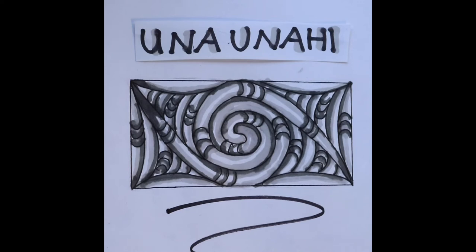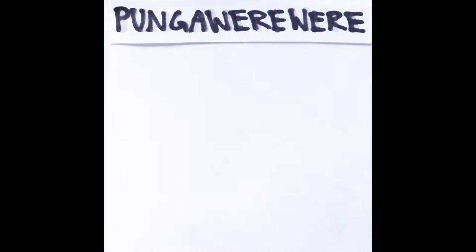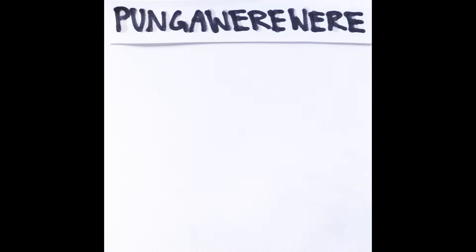We're going to draw a punga uere uere. Very similar to the past two patterns, but there are a few things that set this design apart. One of which is the centre. You want to draw a diagonal line and extend it out like we've done with the past two designs. The next steps are the same as the rape rape.